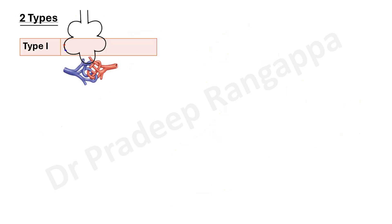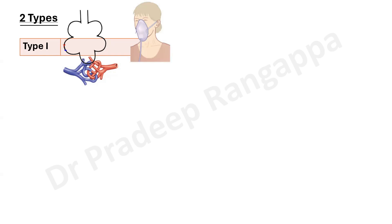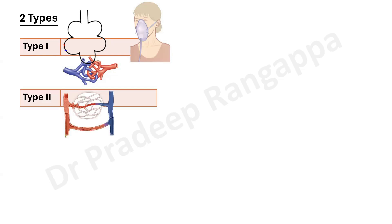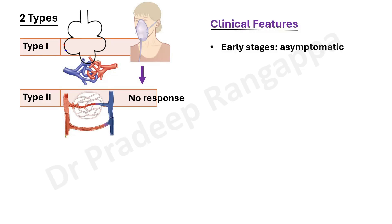There are two types of hepatopulmonary syndrome. Type 1: the AV shunt occurs at the alveolar capillary junction or at the pulmonary vasculature at the alveolar level. These respond better to supplemental oxygen. Type 2: the shunt occurs at sites distant from the alveoli — anywhere in the lung parenchyma, not necessarily at the alveolar capillary junction. Type 2 does not respond to supplemental oxygen and carries a worse prognosis.